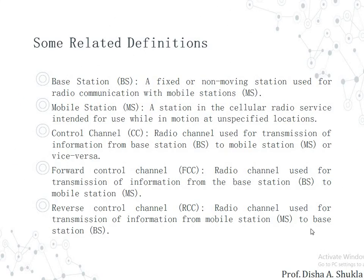Before starting, let's discuss some related terms. The first one is Base Station (BS) — it is a fixed or non-moving station used for radio communication with the mobile station. A Mobile Station is a station in the cellular radio service intended for use while in motion at an unspecified location — that is, the mobile devices you use are called mobile stations.